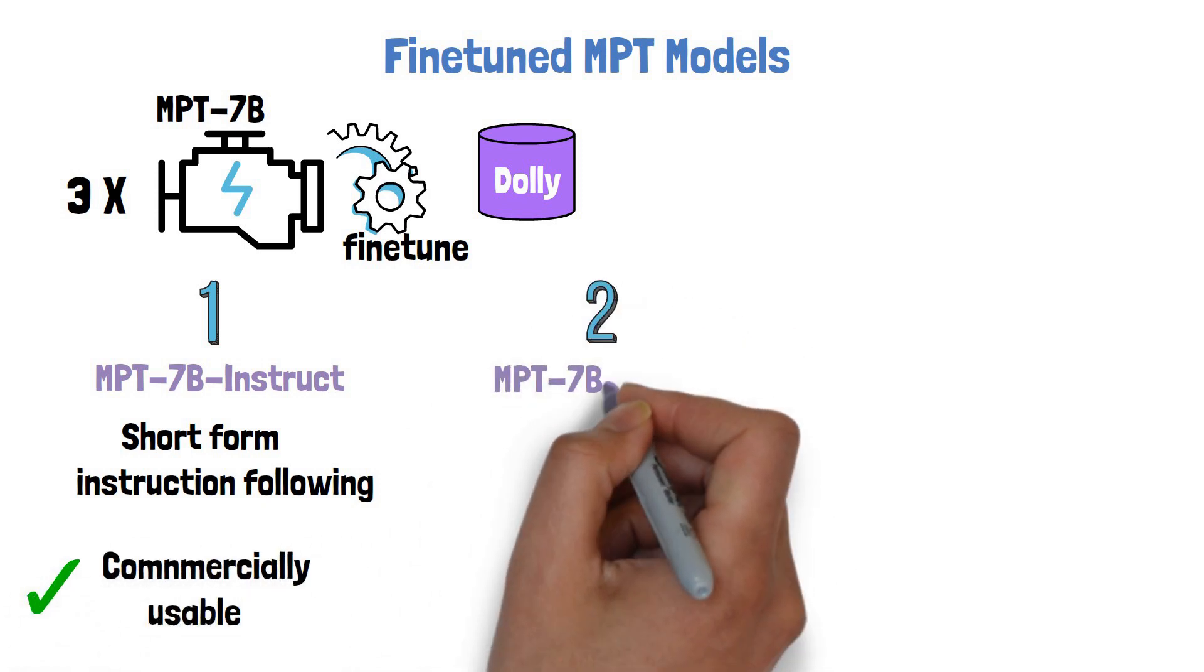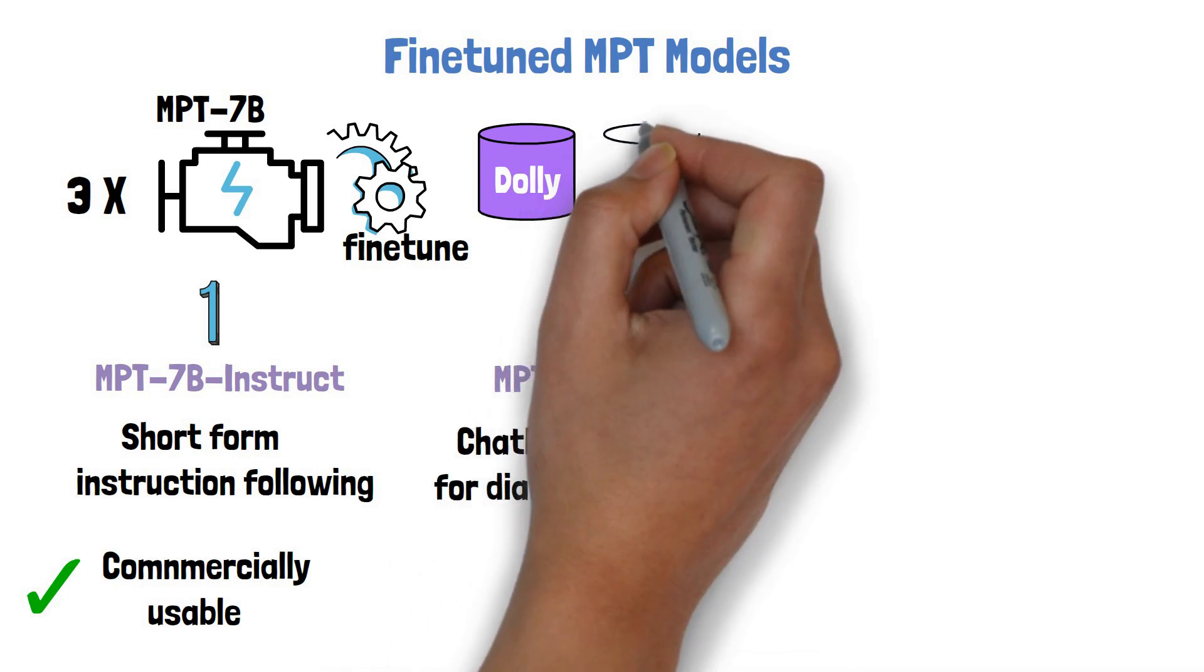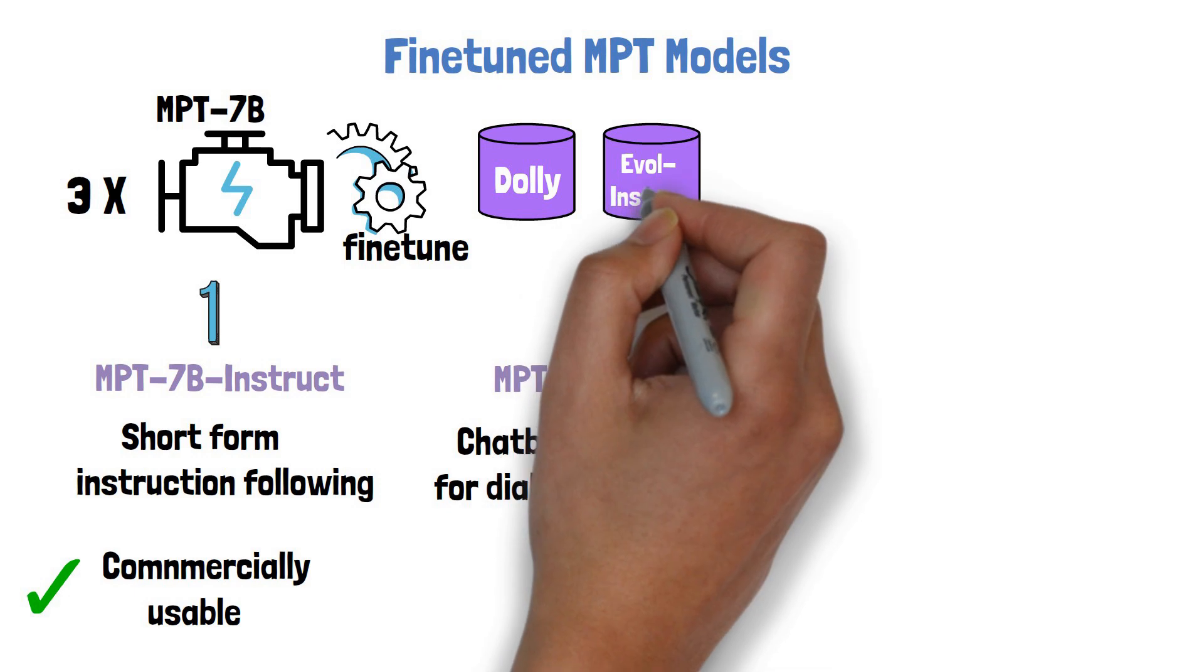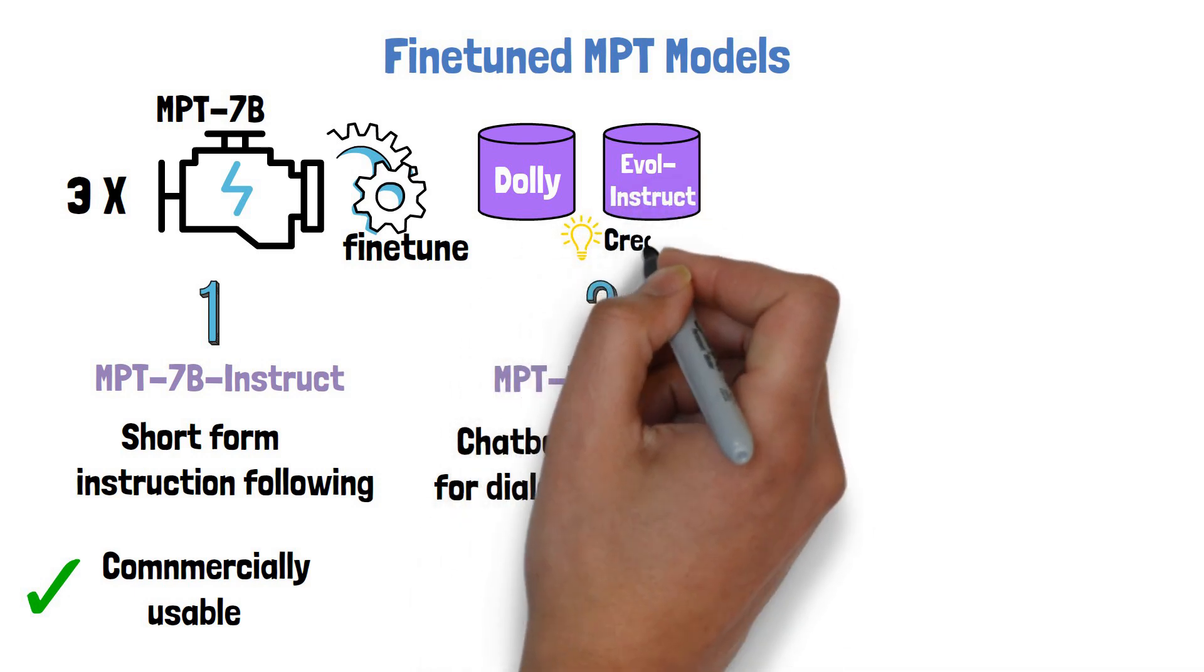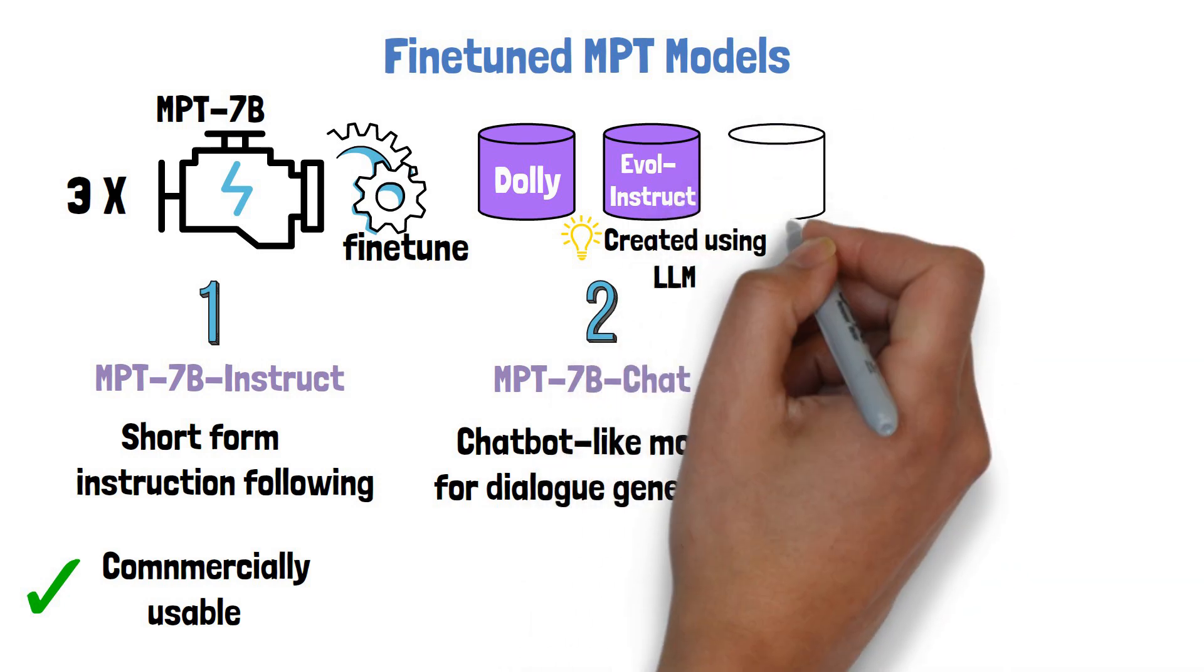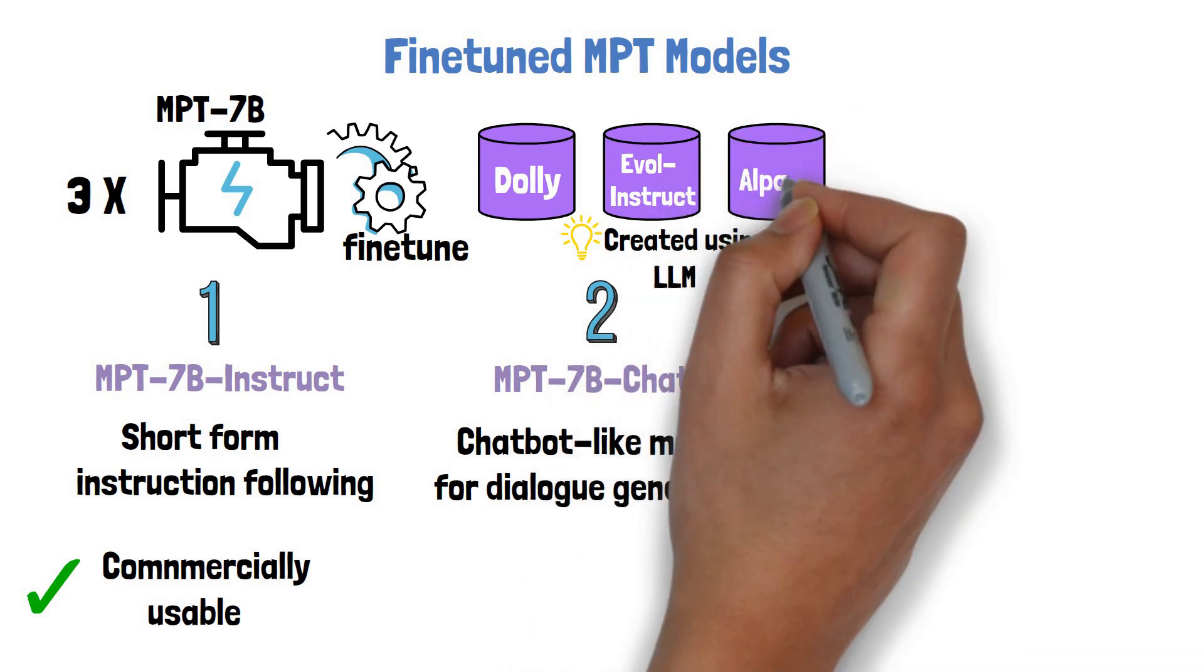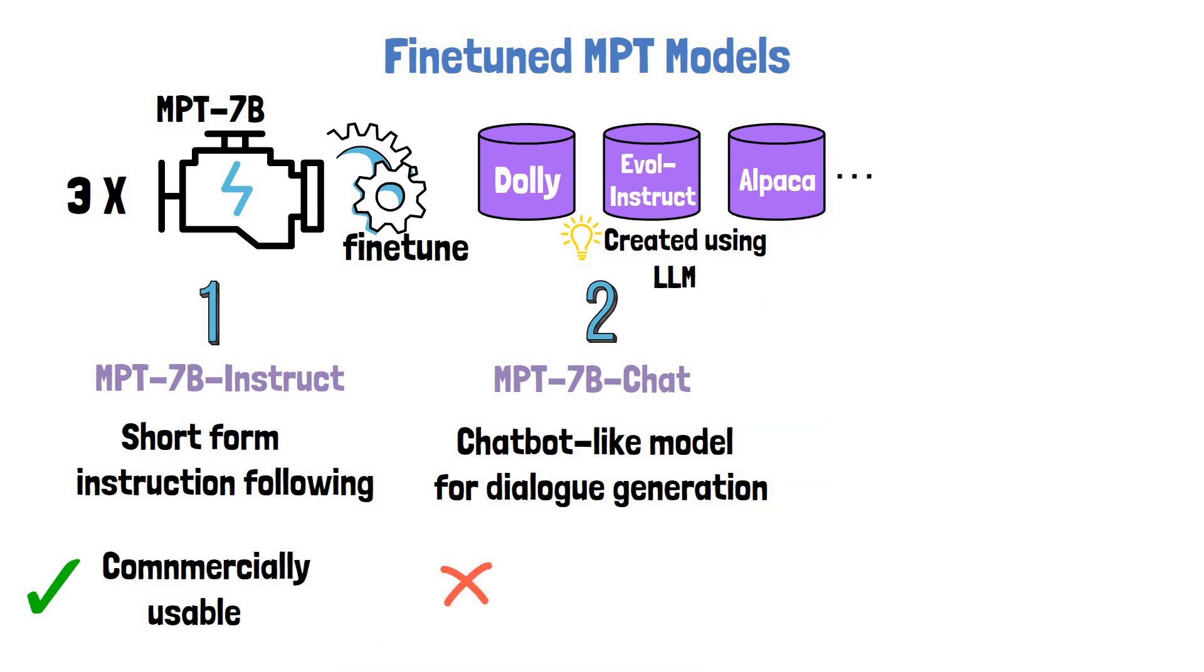The second one is called MPT-7B Chat, which is a chatbot-like model for dialogue generation. It was trained on datasets such as Evol Instruct, which is a very cool dataset created using LLM. I explained this dataset in the video about Wizard LLM if you are interested to learn about it more. Alpaca and few more datasets were also used to fine-tune this model. The downside is that this model is not commercially usable.